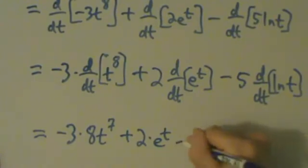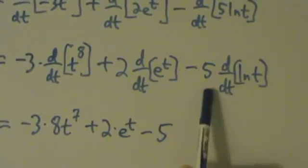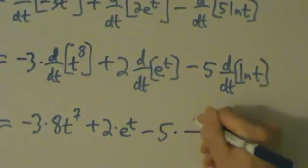And then over here, we still have this -5. And then we have d/dt of natural log of t. So it's just plain old natural log of t, and we know the derivative of that is 1 over t.